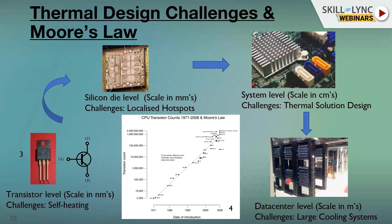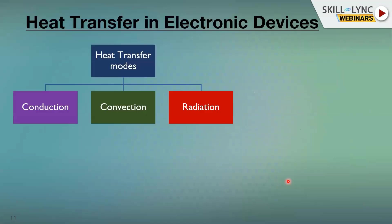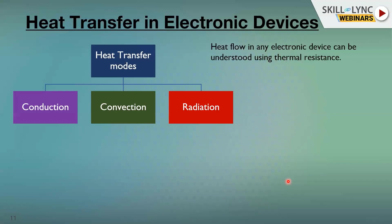We will be discussing how heat transfer happens in electronic devices. Heat transfer in electronic devices is no different than other devices — we have the same heat transfer modes: conduction, convection, and radiation. To understand the heat flow in any device, you have to understand the concept of thermal resistance.